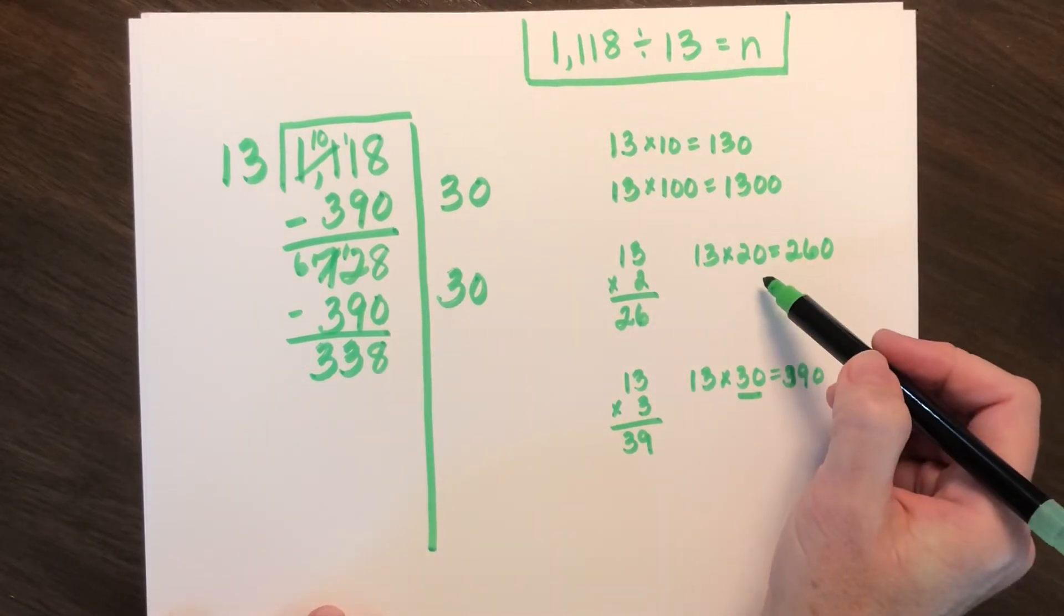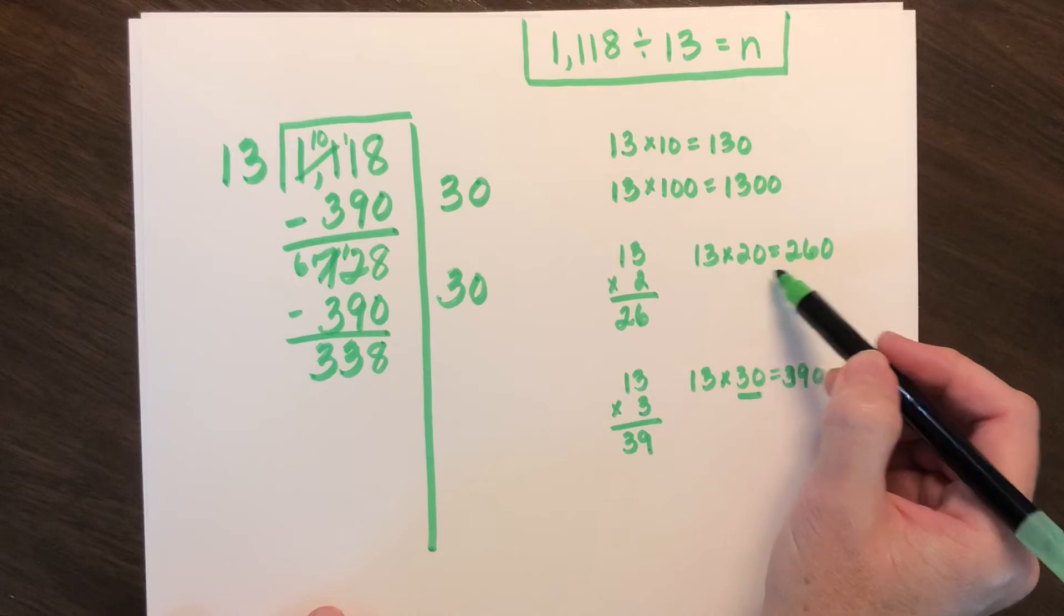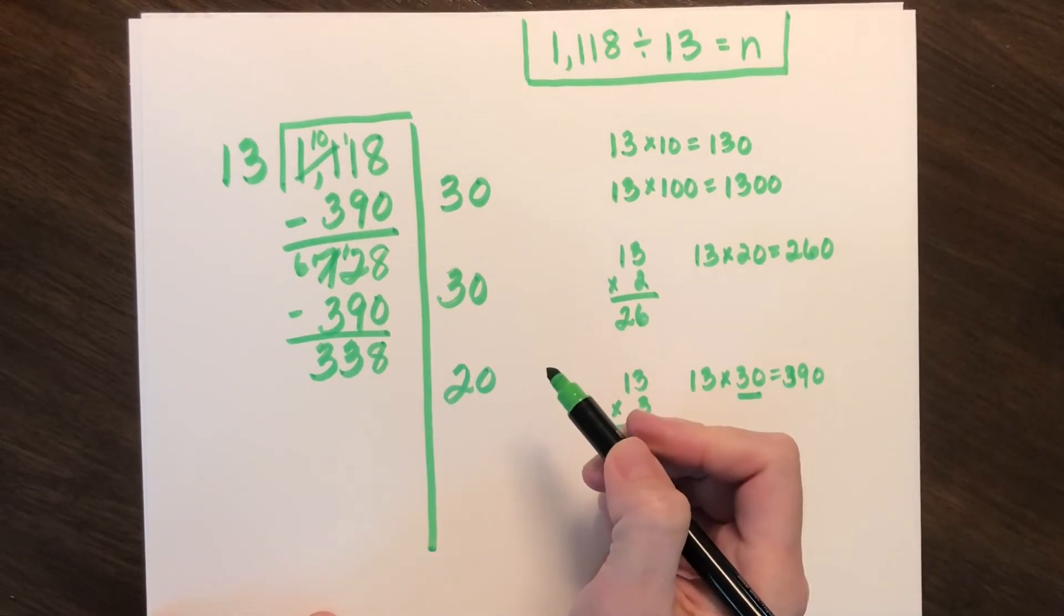So let me go back over at my work and my previous thinking. I could do 13 times 20, which gives me 260. So I could do at least a group of 20.